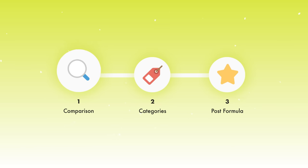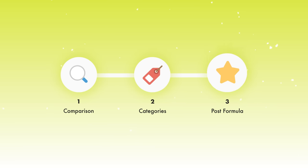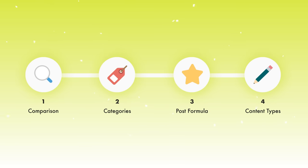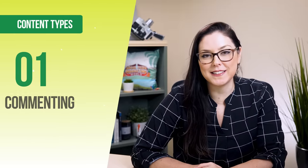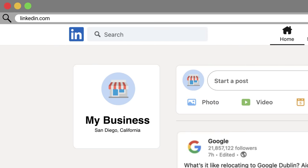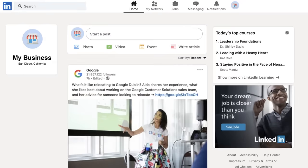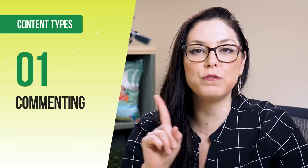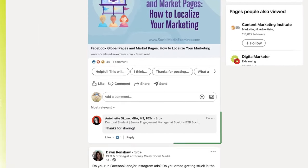We now have the language, the categories that work best, and the post formula. Let's get into the content types. The first content type is something most people don't think about — commenting. As a company page, you can comment out in the newsfeed as your company brand. That is something many people do not realize and don't take advantage of.